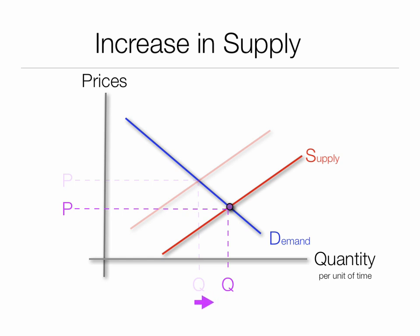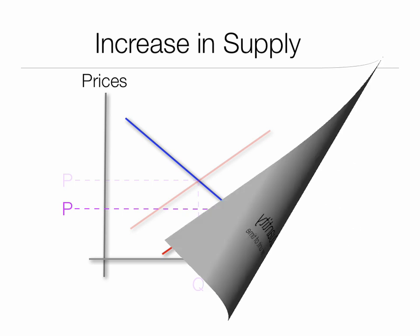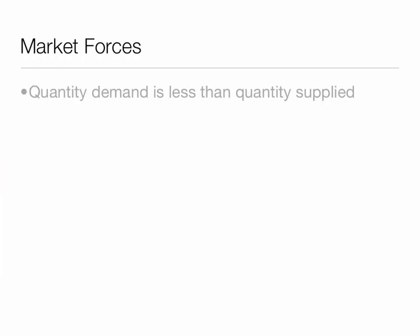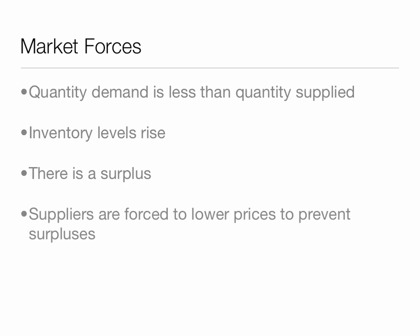Quantity demanded increases. There are pressures for prices to fall. The market forces are that quantity demanded is less than quantity supplied. Inventory levels begin to rise. There is a surplus. Suppliers are forced to lower prices to prevent surpluses.